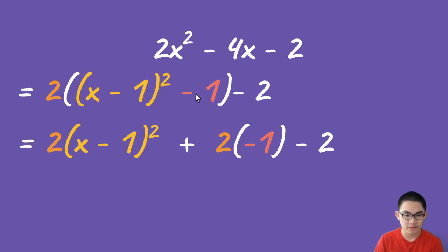When we bring the -1 out of the bracket, we also multiply it to number 2. So 2 times -1 is -2. -2 - 2 gives you -4. This is basically our answer in vertex form.